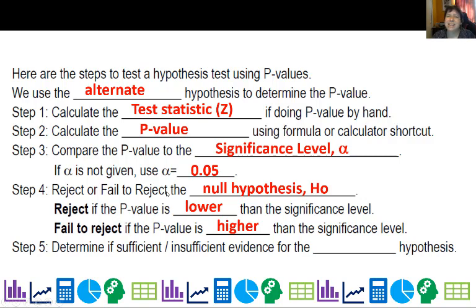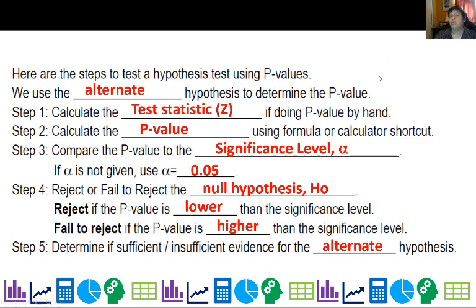If it's higher, that could have happened anyway, so we're not so impressed. If it's low, we determine there is sufficient evidence for the alternate. If it's not low, there's insufficient evidence. It's always about the alternate hypothesis — evidence is only for the alternate, not for the null. We don't gather evidence that people are innocent; we try to gather evidence to show people are guilty. We assume they're innocent, which is why we're trying to see if we have sufficient evidence to change our mind.